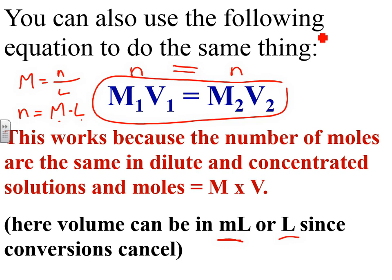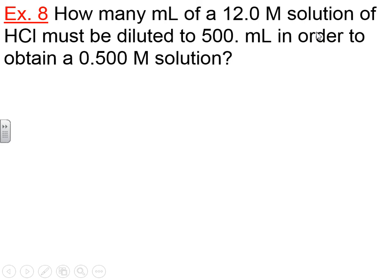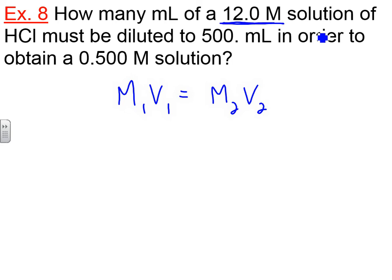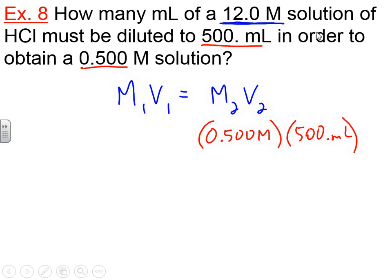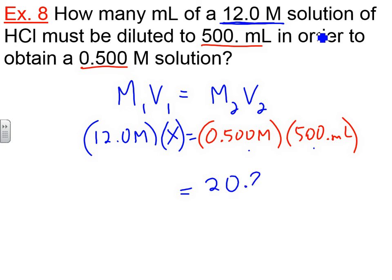Let's do the same problem using this equation: M1V1 = M2V2. Our concentrated solution is solution one with a molarity of 12 and a volume of x. Our dilute solution is solution two with a molarity of 0.5 and a volume of 500 mL. We simply solve for x by multiplying 0.5 × 500 and dividing by 12, which gives us 20.8 milliliters. Same answer, but much quicker.